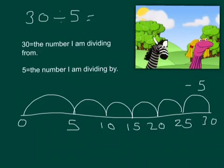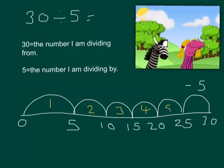Okay, so remember, count the number of jumps or groups of 5 we have made. 1, 2, 3, 4, 5, and 6. So, the answer to 30 divided by 5 is 6.